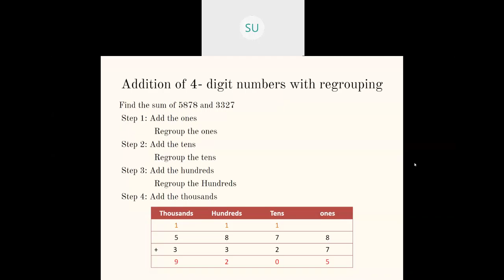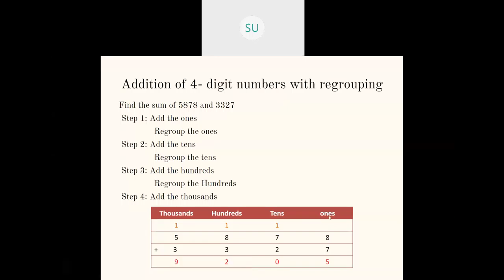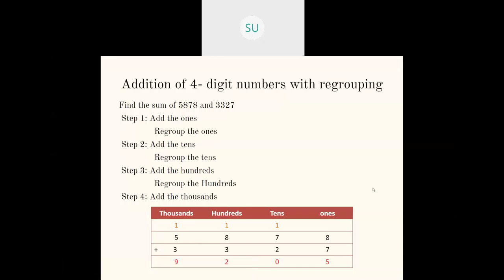Then we saw addition of four-digit numbers with regrouping. First, write the numbers in their columns — all the ones digits in the ones place, tens digit in tens place, hundreds in hundreds place, and thousands digits in thousands place in vertical columns. Start adding the ones; if the sum is greater than 9, regroup the ones to tens — that is, carry it over. Then add the tens; if again greater than 9, regroup and carry over to hundreds. Add all digits in hundreds plus the carryover. If greater than 9 again, carry to thousands, then write down the final answer.